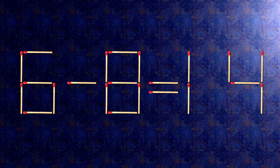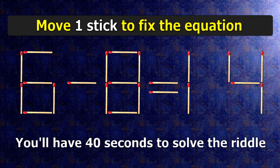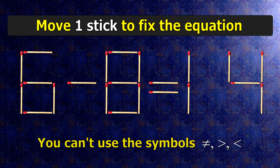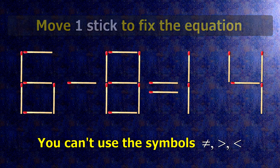We have the equality 6 minus 8 equals 14. Our equality is wrong. We need to move one match to make our equality correct.